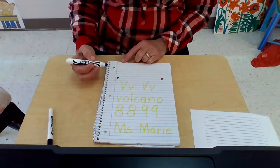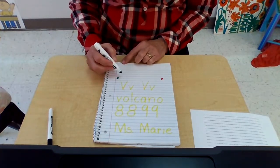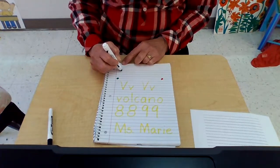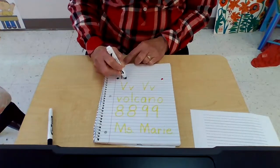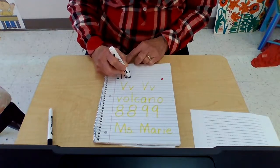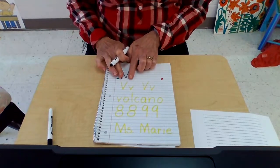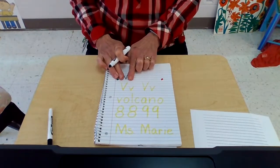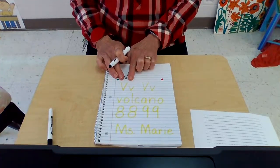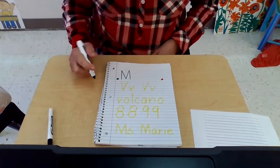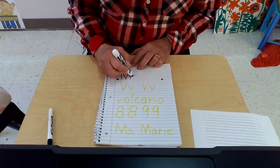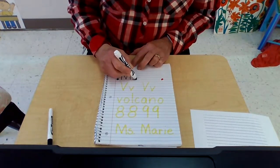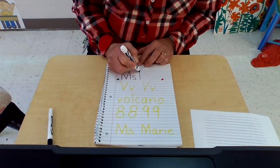I'm going to write Miss Marie — you write your name while I'm writing mine. I'm going to start at the skyline, go down and touch. Diagonal, diagonal, and down. Look what's in the middle of my name — there's a V in the middle of that M. I hadn't noticed that before. I think that's kind of cool. You continue to write your name as I write mine, and then we'll go on down to the letter V.